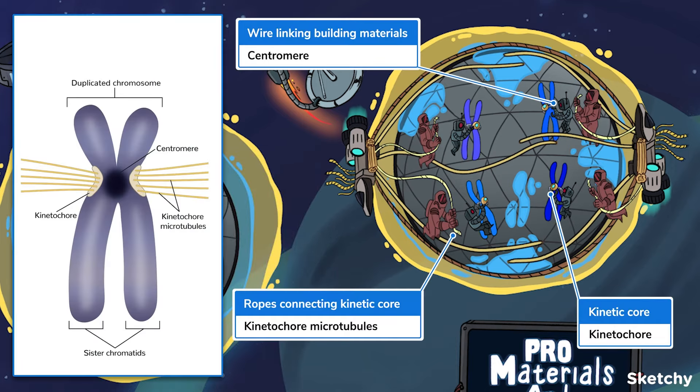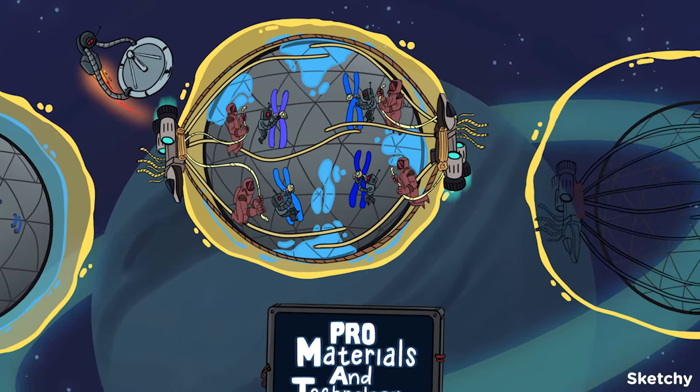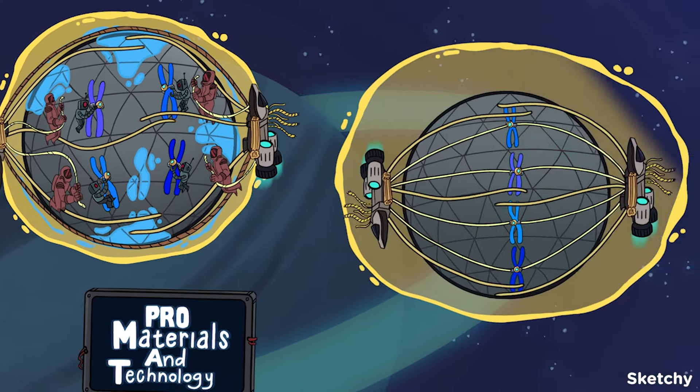And lastly, kinetochore microtubules bind to kinetochores. Remember that kinetochores hook onto the centromeres. And the centromeres, well, they link up the sister chromatids. Alright, now that we've got all our Xs hooked up, we can move onto the next stage,